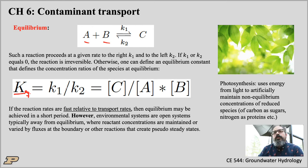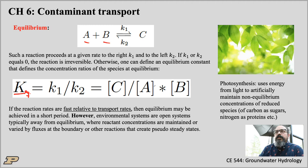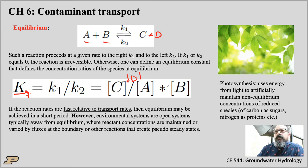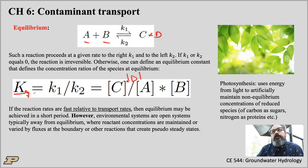The equilibrium constant equals the products over the reactants. So C is the product divided by the product of the reactants A times B. If the products were C and D, it would be C times D divided by A times B. This equilibrium constant defines how much of the products versus reactants coexist in solution at equilibrium.